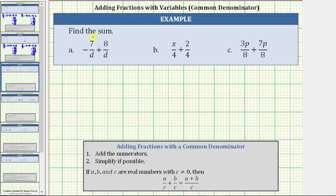So for a we have negative seven over d plus eight over d. For this first negative fraction, let's move the negative sign into the numerator to make it easier to keep track of the sign. This gives us negative seven over d plus eight over d.